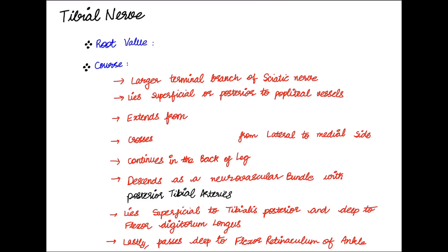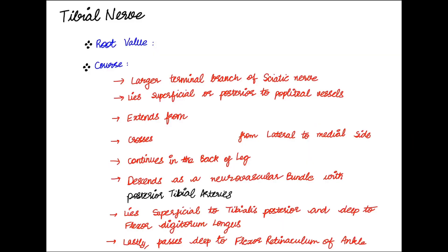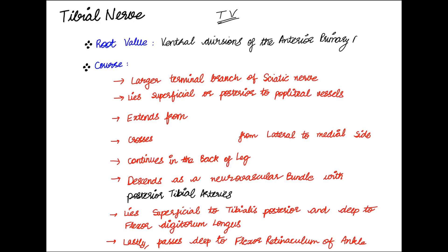Now let us look at the tibial nerve. The root value is the ventral divisions of the anterior primary rami of L4, L5, S1, S2, and S3. Looking at the course, it is the larger terminal branch of the sciatic nerve.